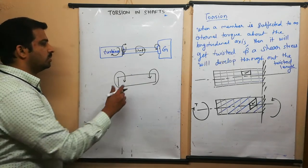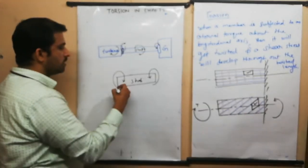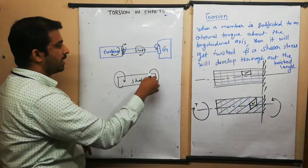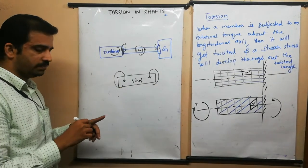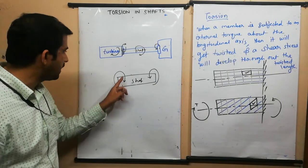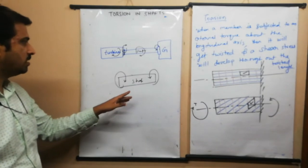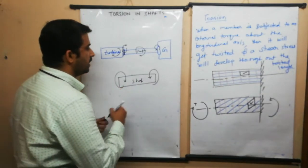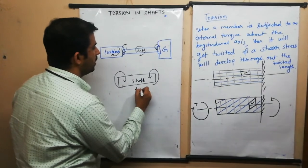The shaft has a clockwise action at one end and an anticlockwise reaction at the other. Due to this clockwise action and anticlockwise reaction, torsion will exist in the shaft.